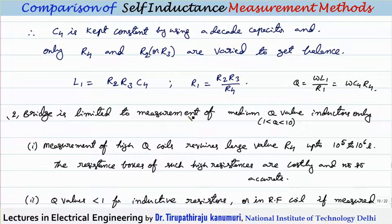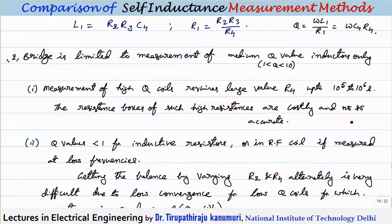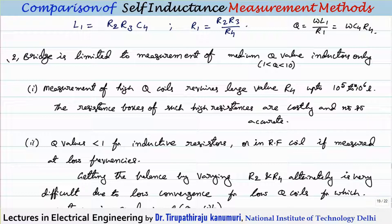For Q greater than 10, the required value of R4 can range from 10⁵ to 10⁶ ohms. Getting an accurate variable resistor of such high value is very difficult, which is why this method is not used for measuring coils with Q greater than 10.